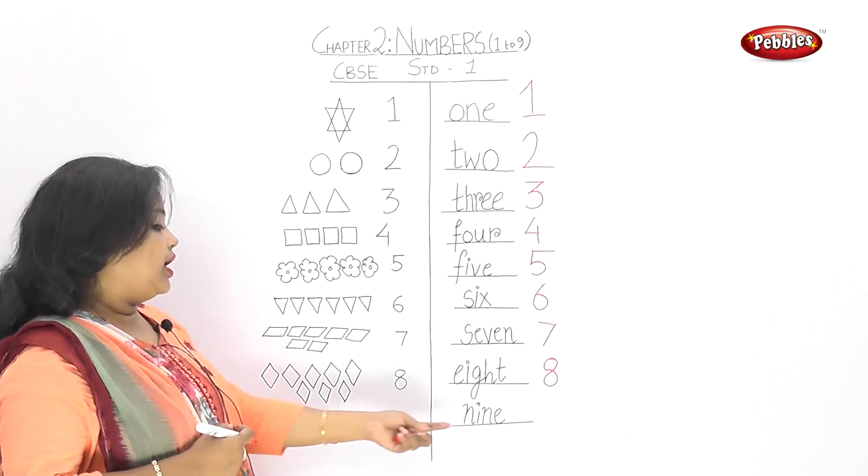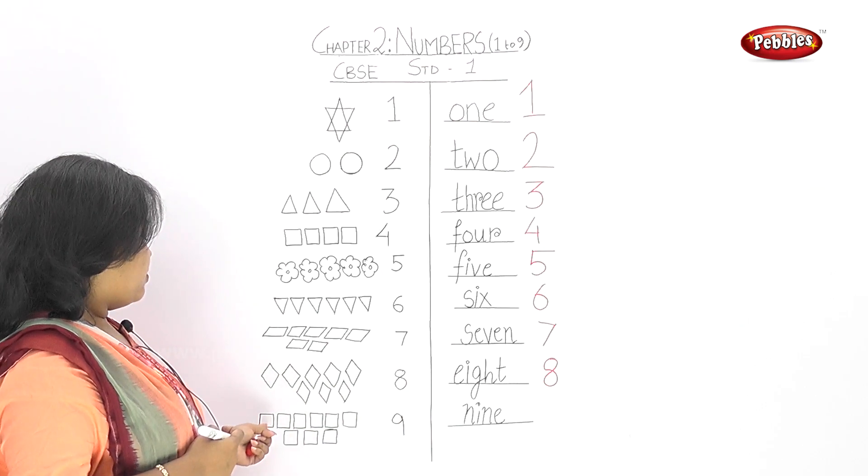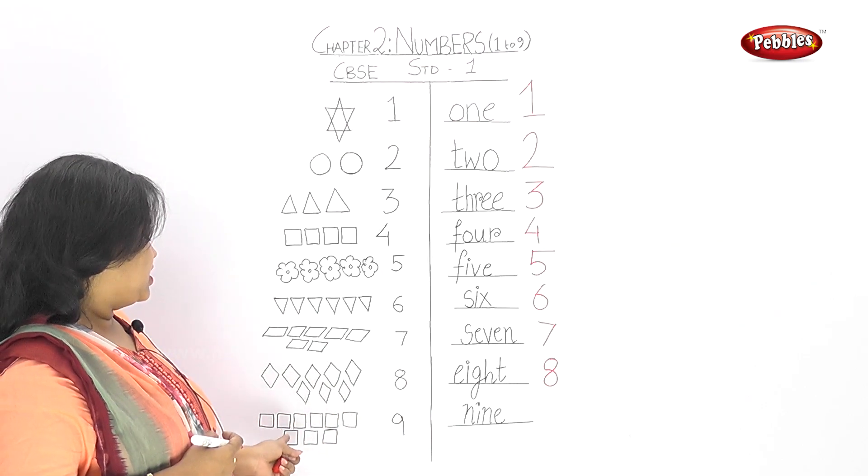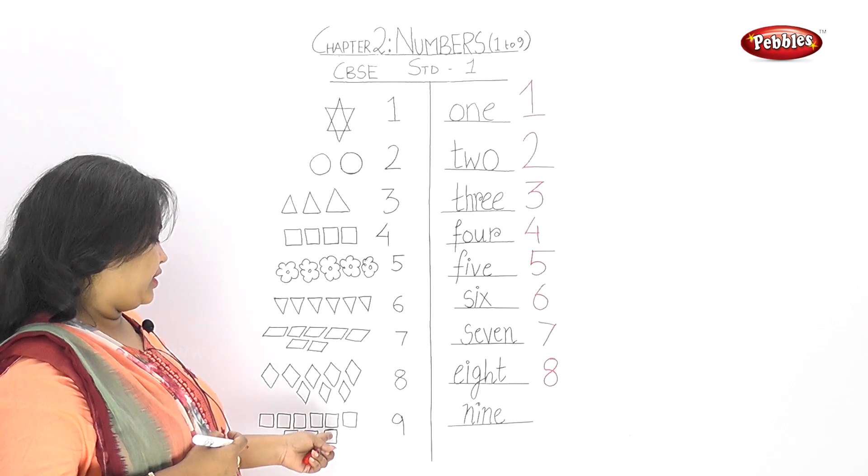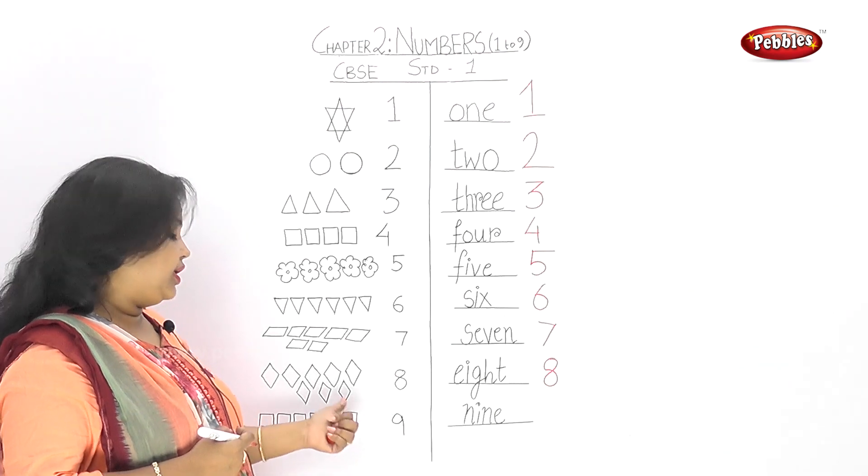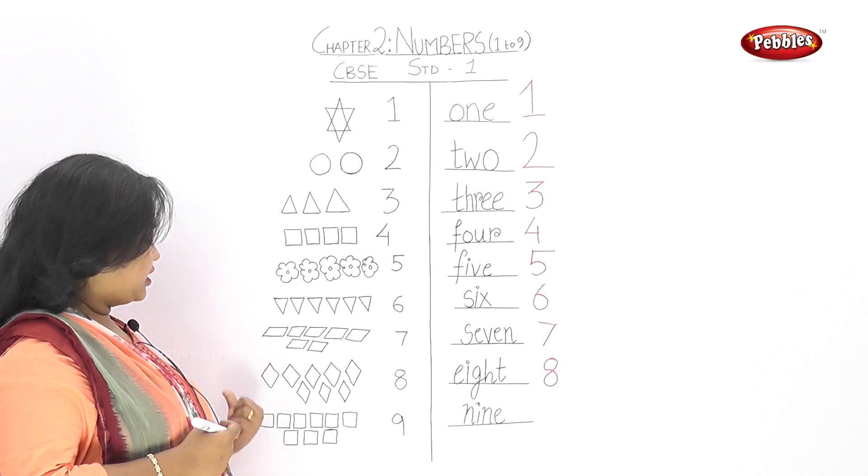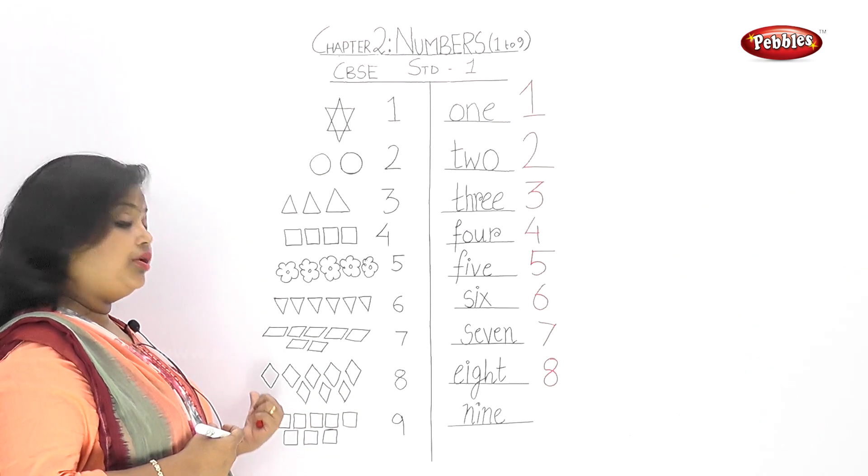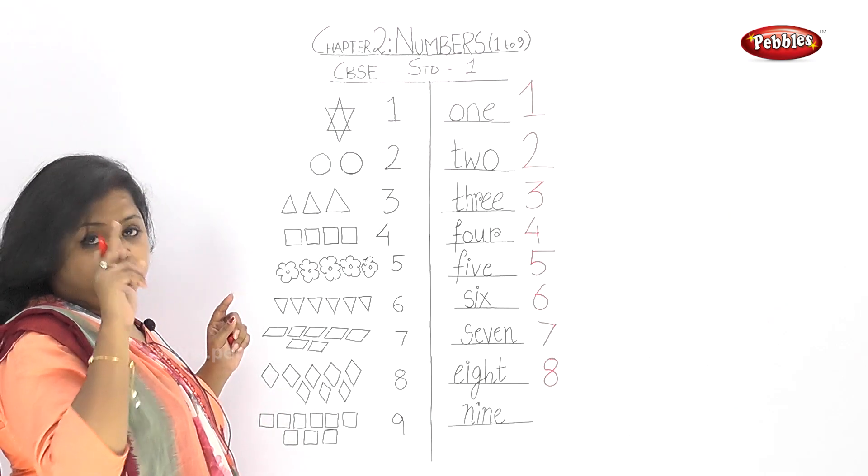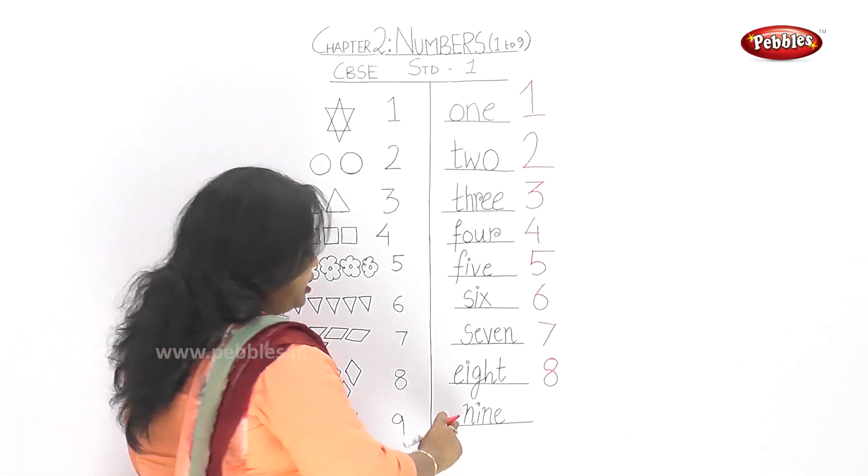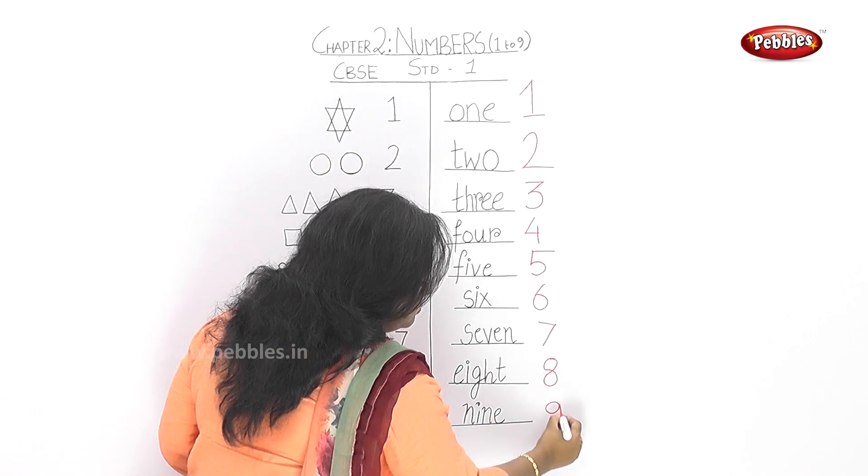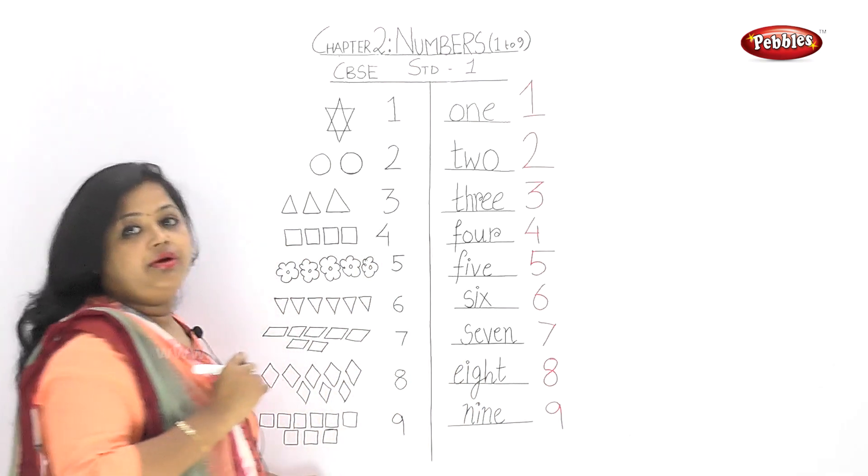And then we have 9. Nine is 1, 2, 3, 4, 5, 6, 7, 8, 9. So 9, what have we drawn here? Tell me. Let's do a revision. For 9 we have drawn squares. So N-I-N-E, 9.